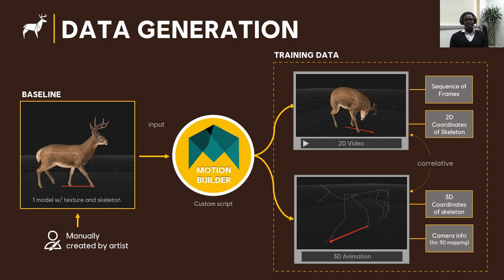To generate those data, we leverage the expertise of the Ubisoft wildlife team in China, which has a rich catalogue of animal animation assets previously created for some of Ubisoft's games. Given their assets, we developed a semi-automated process to generate the training data. The data mainly consists of images of the animal captured from different camera angles, the 2D and 3D coordinates of the joints that compose the skeleton of the animal on each frame, together with some camera parameters.